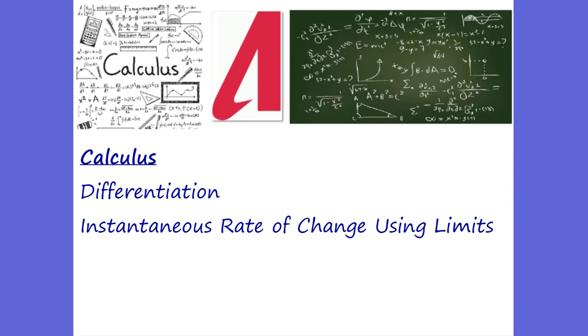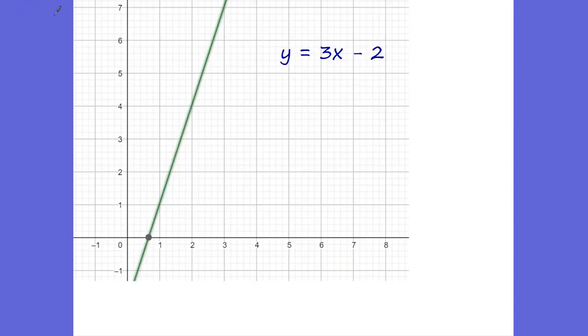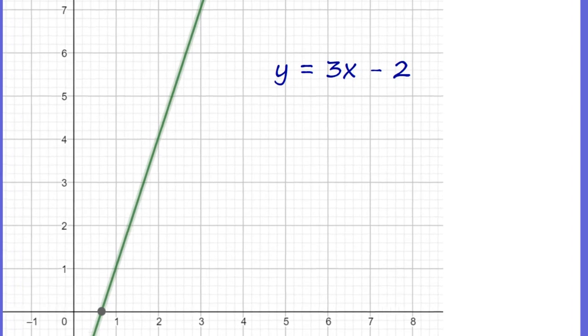Up to this point, we've only been able to find the average rate of change — the average slope. That didn't give us the full picture. What we want to find out is what's called the instantaneous rate of change.